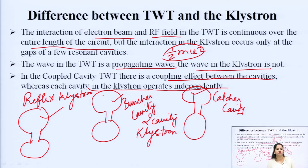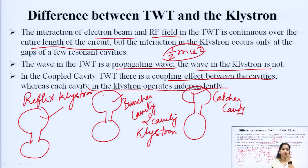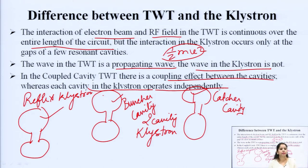In a coupled cavity TWT there is a coupling effect between the cavities, whereas each cavity in the klystron operates independently. In the slow wave structure TWT there is no existence of a cavity, and that is the most important type of TWT which we are going to discuss in this lecture. In the coupled cavity TWT there is a coupling effect between cavities present in the TWT, but in klystron cavities there is no coupling effect. These are the three major differences between the TWT and the klystron.